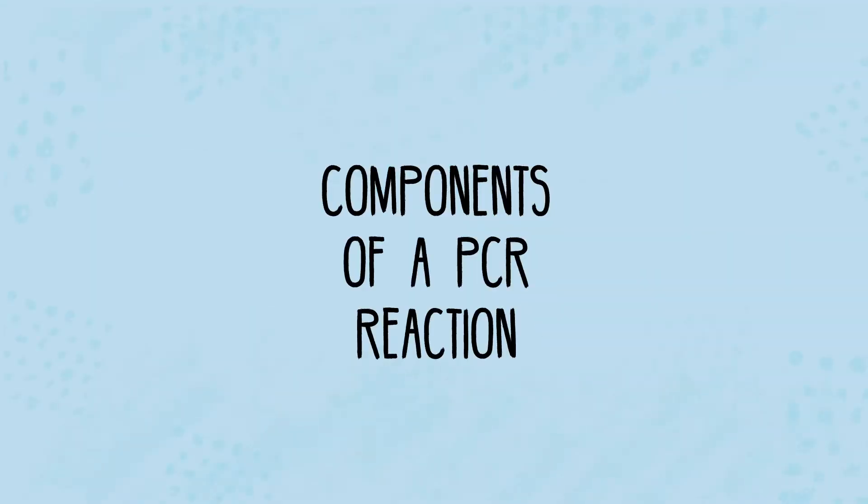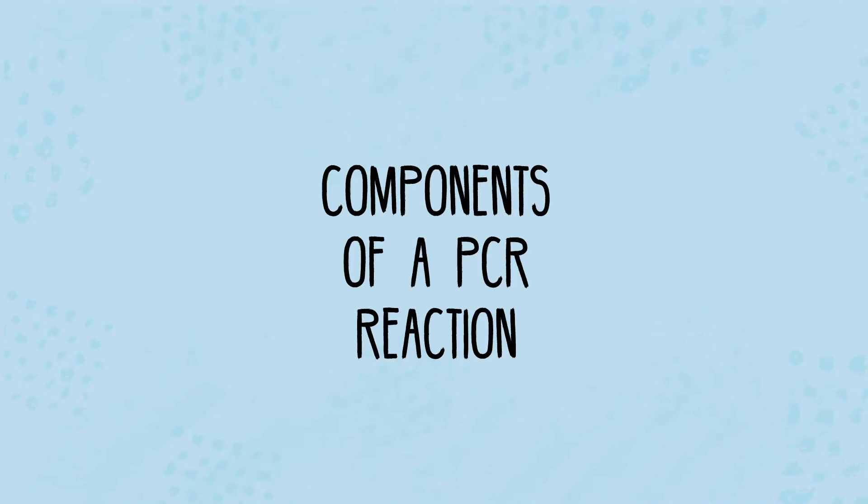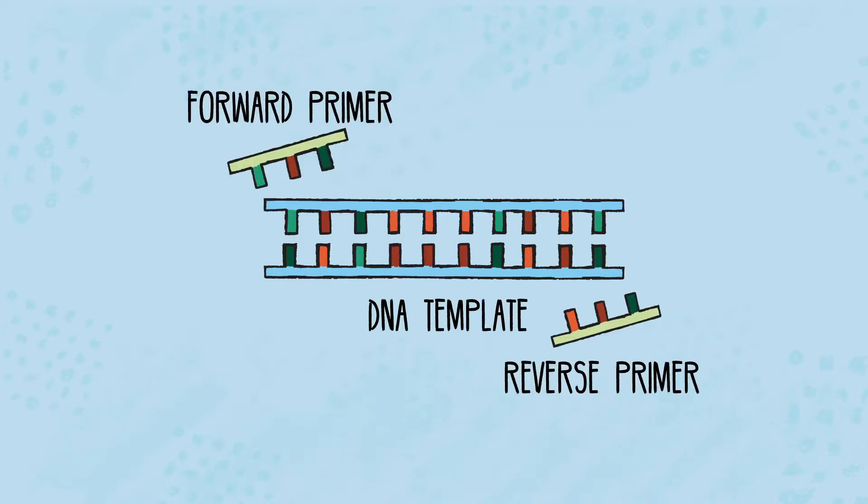The major components used in PCR include a double-stranded DNA template, primers that anneal to target sequences on the denatured DNA, and thermostable DNA polymerase enzyme, which catalyzes formation of new DNA strands.